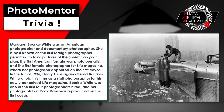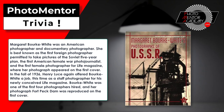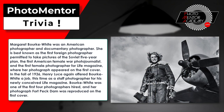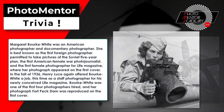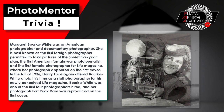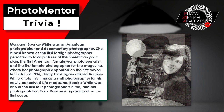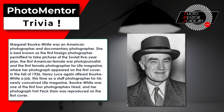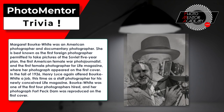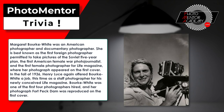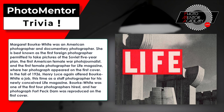The correct answer is C. Margaret Bourke-White was an American photographer and documentary photographer. She is best known as the first foreign photographer permitted to take pictures of the Soviet Five-Year Plan, and the first American female war photojournalist. In the fall of 1936, Henry Luce offered Bourke-White a job as a staff photographer for his newly conceived Life magazine.